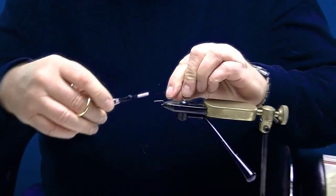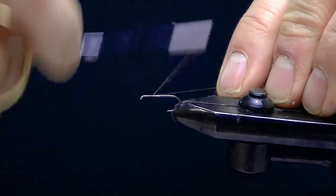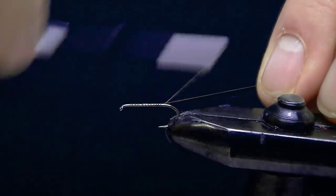So let's get started and I'll explain it as we go. This is a size 12 hook, I'm going to go ahead and put an under body of thread.